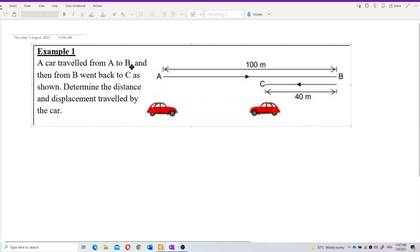A car travelled from A to B and then from B went back to C as shown. Determine the distance and displacement travelled by the car.